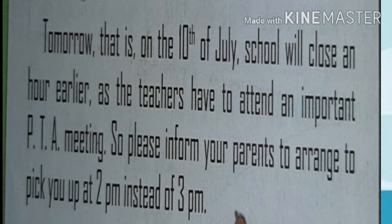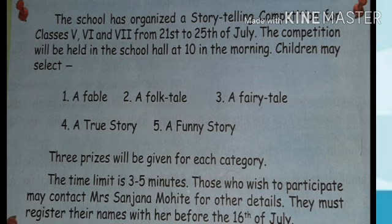There are various examples of announcements. The next one: 'The school has organized a storytelling competition for classes 5th, 6th, and 7th from 21st to 25th of July. The competition will be held in the school hall at 10 in the morning. Children may select a fable, a folk tale, a fairy tale, a true story, or a funny story. Three prizes will be given for each category. The time limit is 3 to 5 minutes. Those who wish to participate may contact Mrs. Sanjana Mohite for other details. They must register their names with her before 16th of July.'